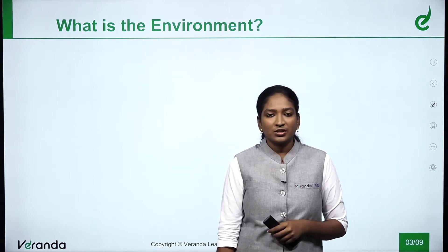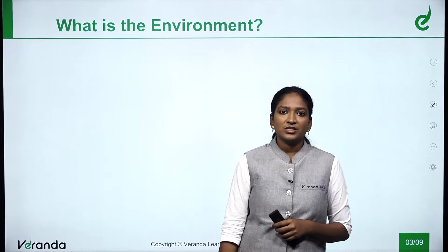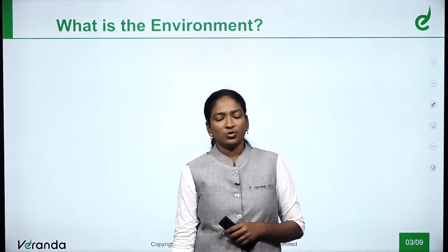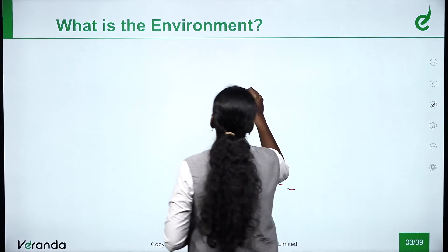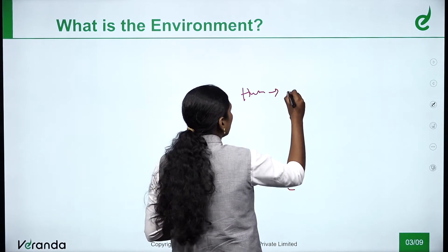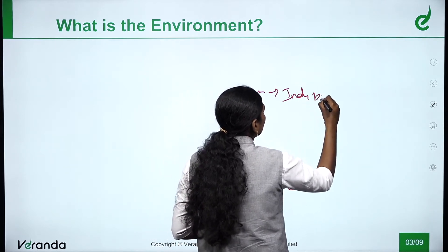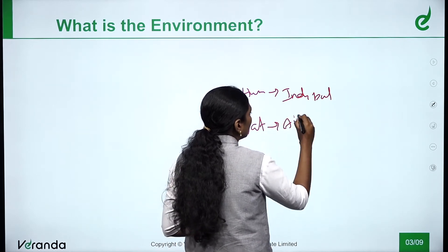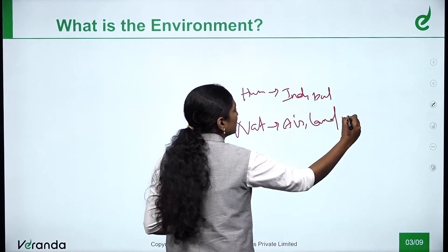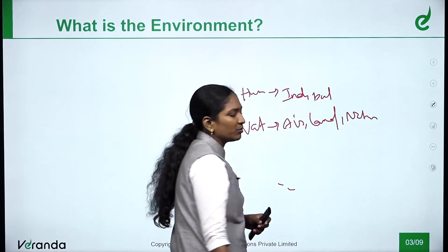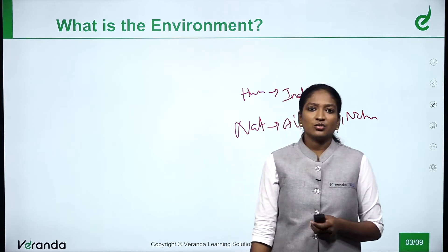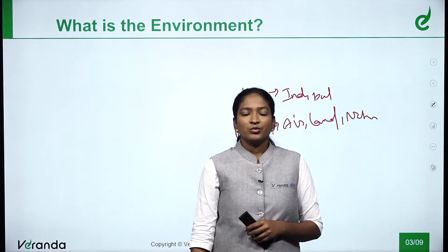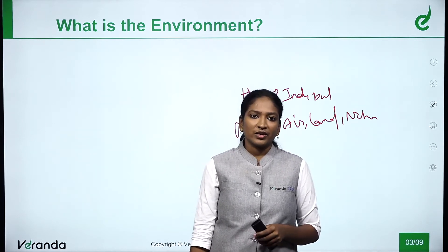Let's start with what is environment. Environment is something which is immediately near to you — it may be physical or human-made. If it is human-made, it may include industries or buildings. If it is nature, it may be air, land, or things naturally present around you. It may be an ecosystem too. Simply, we call it the biotic and abiotic factors — the living and non-living factors of the environment.